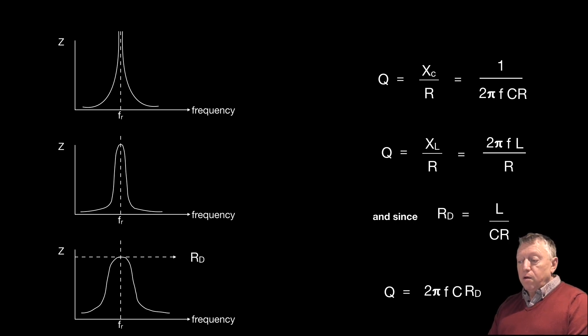So those first two equations simply expand on the concept of the reactance over the resistance. So, we also know that the dynamic resistance, RD, equals L over CR. So the bottom equation, which is given in the equation sheet, is what you probably need to be familiar with. Q equals 2πFC RD.